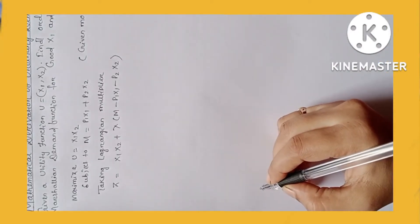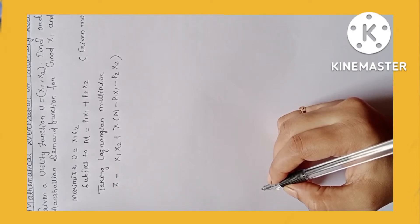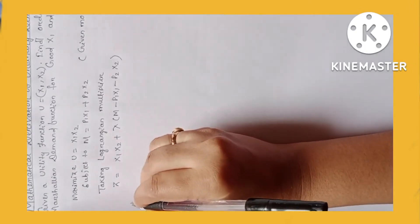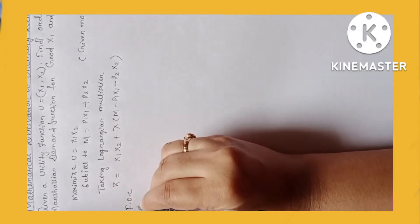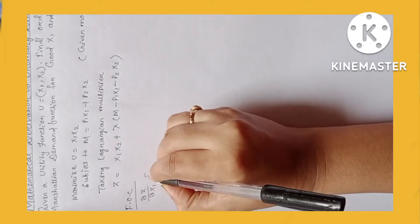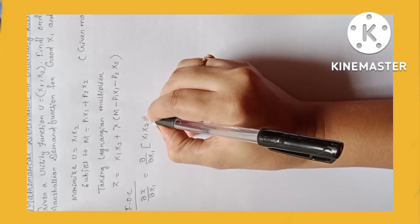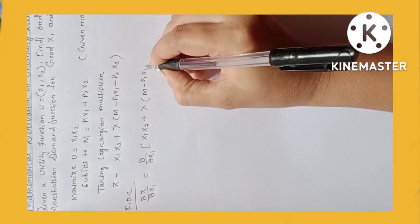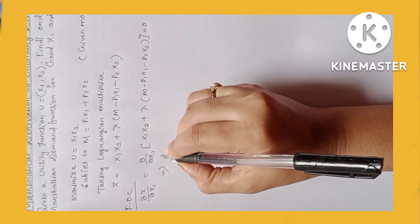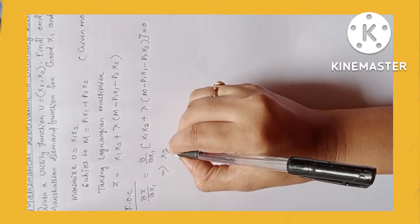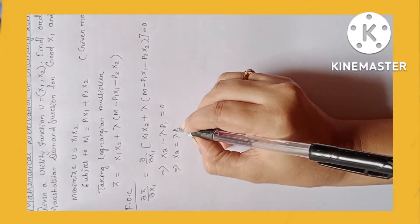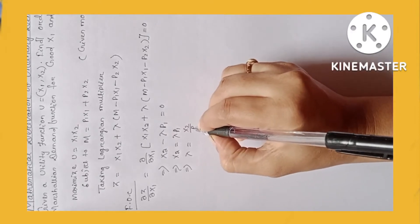Now we will derive the first-order partial derivatives with respect to x1 and x2. First, the first-order condition with respect to x1: dz/dx1 equals d/dx1 of (x1·x2 + lambda·(m − p1·x1 − p2·x2)) equals 0. This implies x2 minus lambda·p1 equals 0, so x2 equals lambda·p1, or lambda equals x2/p1. This is equation number 1.